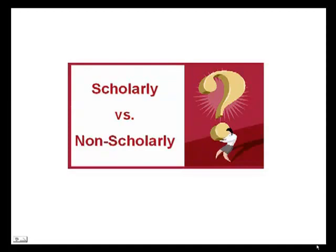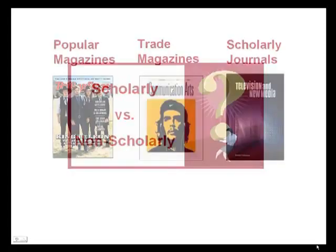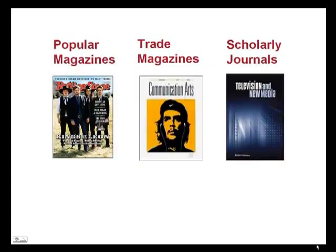Before choosing sources for a research paper, you need to recognize important differences between three broad categories of periodicals: popular magazines, trade publications, and scholarly journals. One difference relates to the level of formality in writing styles and format. Here are some examples demonstrating what this means and why it matters.